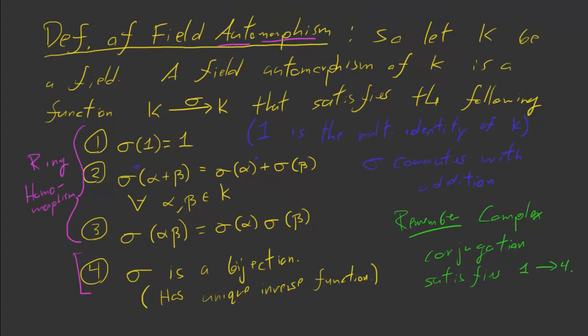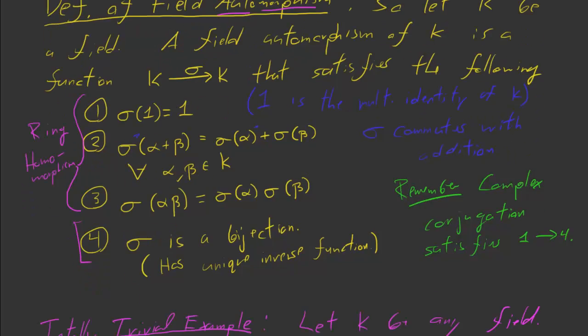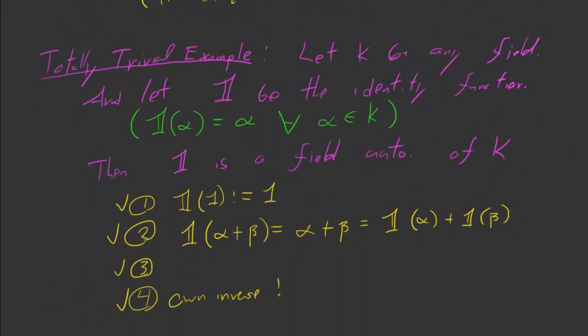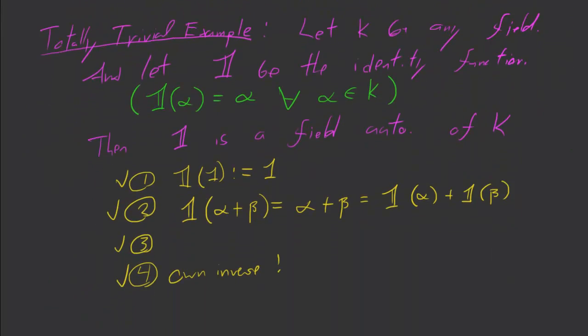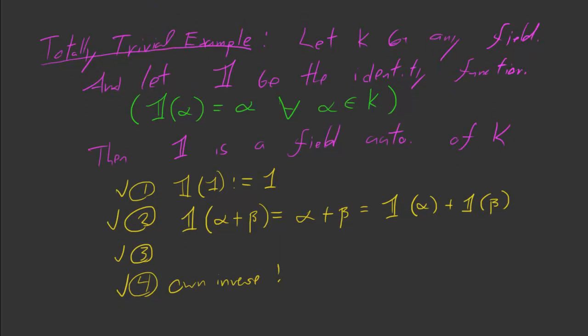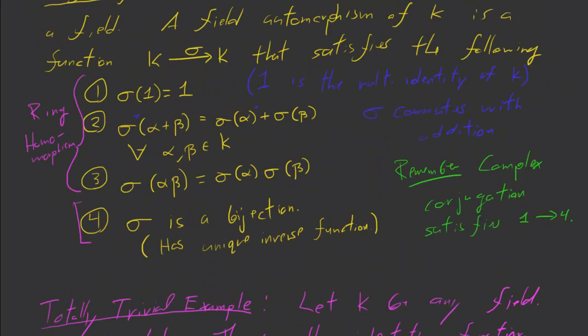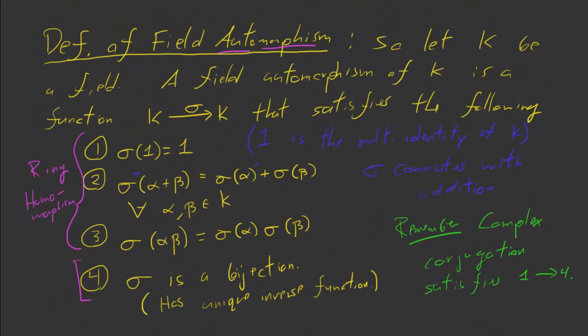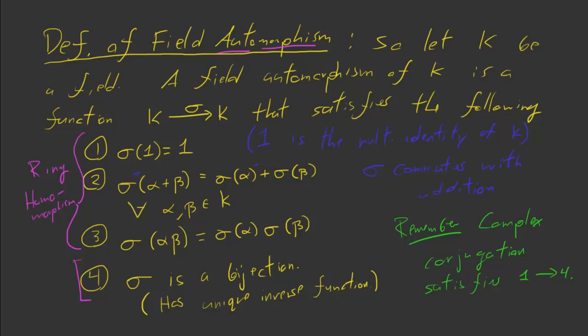We'll see in the very next video that we're going to use the fact that the identity is a field automorphism. Now I want to make a remark about this definition — a consequence of it.